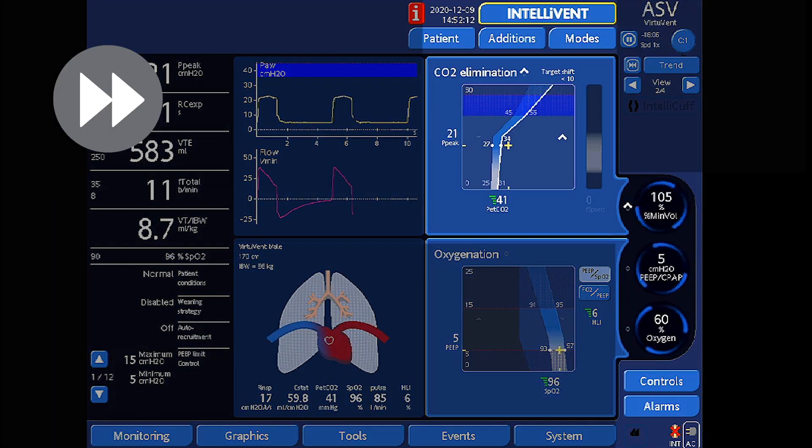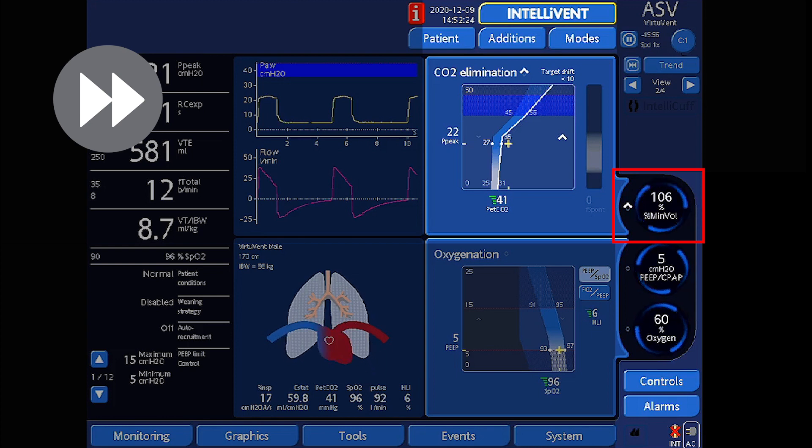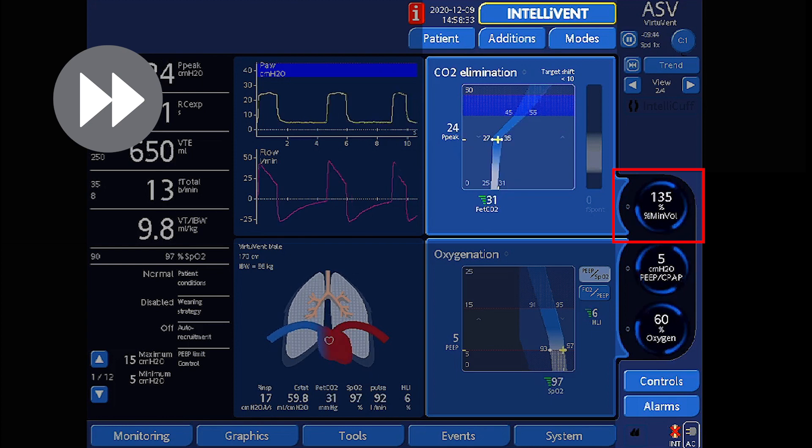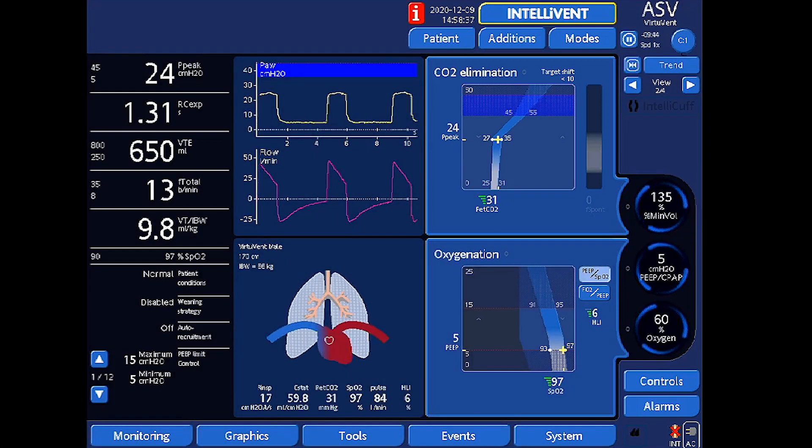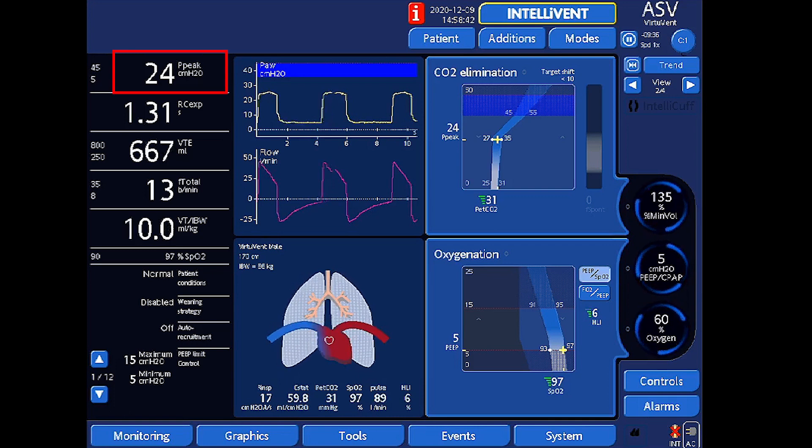The time-lapse shows you how IntelliVent ASV now adjusts the percent minute volume by a maximum of 1% per breath to bring the patient's PET CO2 value into the new target range. With the increase in percent minute volume, the peak inspiratory pressure has increased as well, so the target range has changed slightly to between 27 and 35 mmHg.